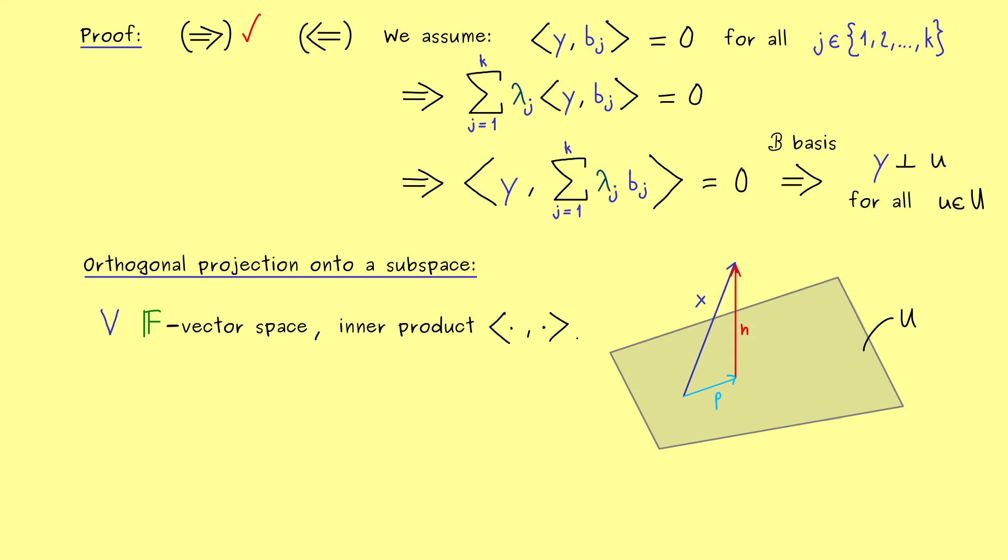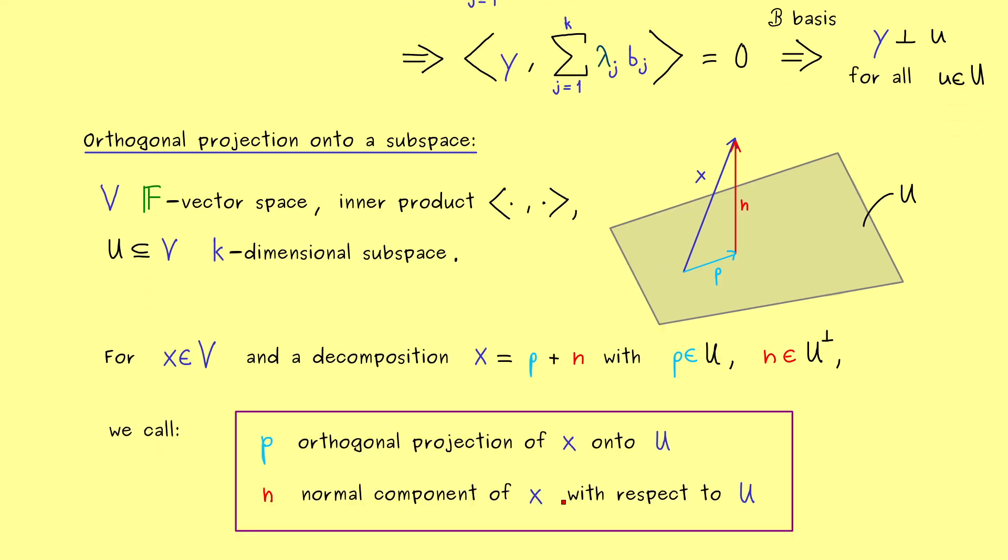Because we only need an F-vector space together with an inner product. And the only restriction we will do now is to consider a finite dimensional subspace. Indeed this makes the generalization from the one dimensional case very simple. Actually everything looks very similar. We still take a general vector x in v and then we search for such a decomposition, where p lies in u and n is orthogonal to the subspace. And to make that clear, I now write that n is in the orthogonal complement of u. And then the names we have for these two components are still the same from the one dimensional case. p is the orthogonal projection of x onto u, and n is the normal component of x with respect to our subspace u.